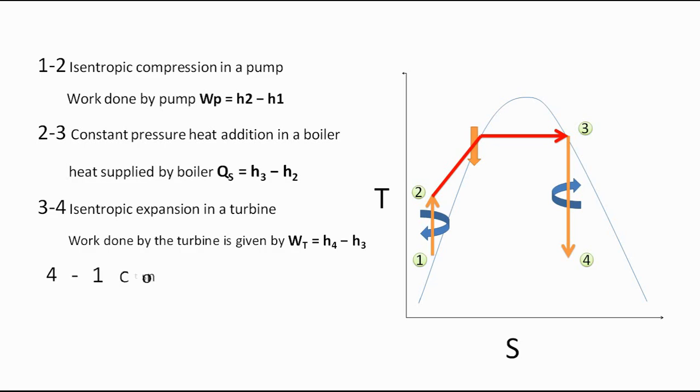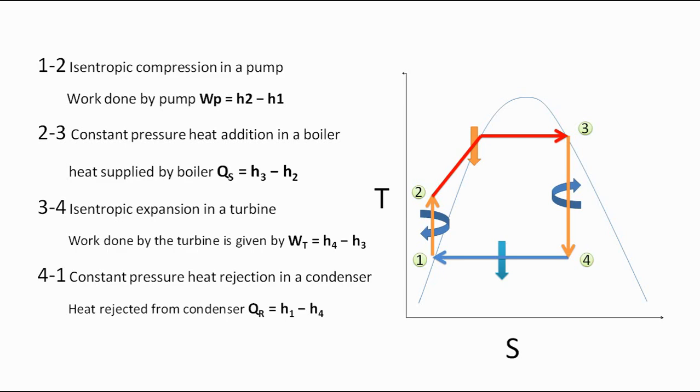The last one is constant pressure heat rejection process in condenser. So this is also the constant pressure heat rejection process. This is also one of the equally opposite process to the boiler, whereas in boiler we add heat at constant pressure and in condenser we are rejecting the heat at constant pressure. So both are equally opposite processes. So Qr, or heat rejected by condenser, can be calculated using the formula Qr = h1 - h4, and here also h1 and h4 are the enthalpies.